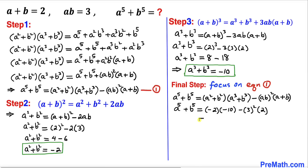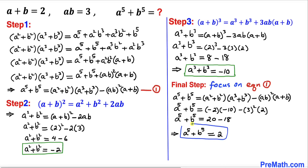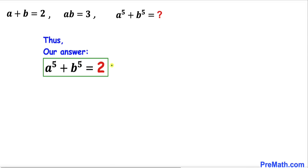Simplifying: negative 2 times negative 10 gives us 20, minus 3 squared which is 9, times 2 is 18. Therefore a power 5 plus b power 5 turns out to be simply positive 2. As you can see, our simplified answer for a power 5 plus b power 5 is 2. Thanks for watching and please don't forget to subscribe to my channel for more exciting videos.